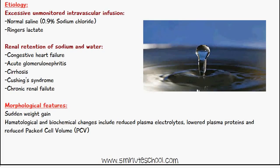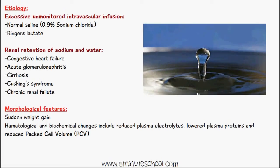The morphological features of overhydration include a sudden amount of weight gain, along with hematological and biochemical changes: reduced plasma electrolytes, lowered plasma proteins, and a reduced packed cell volume — which is the opposite of dehydration, where we see an increased packed cell volume.